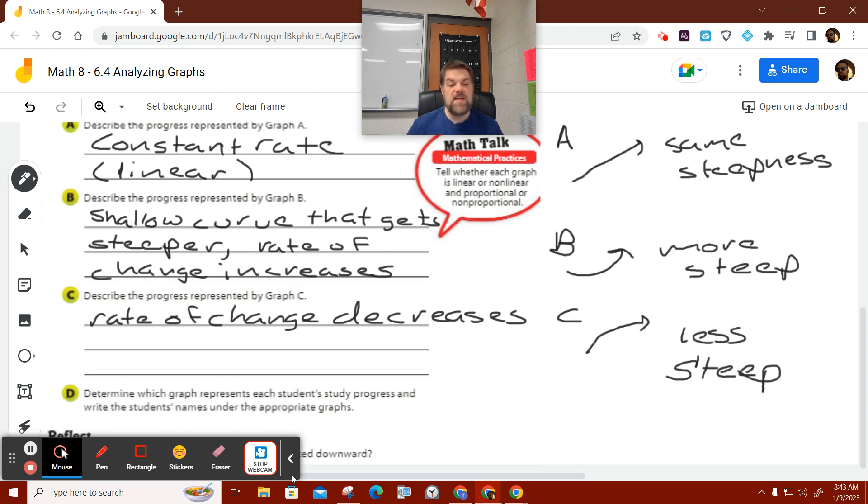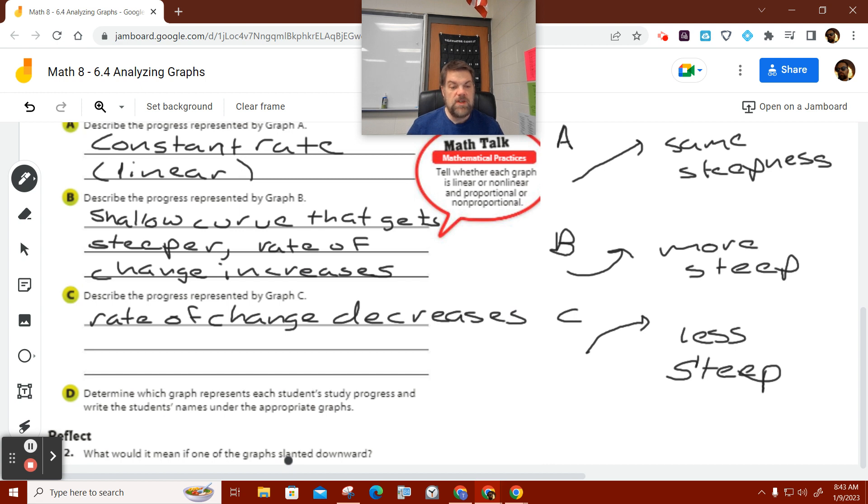So now finally for D, it says determine which graph represents each student's study progress. Write the names under the appropriate graph where I did it. What would it mean for the graph to slant downward? Yes. Well, they were forgetting words.